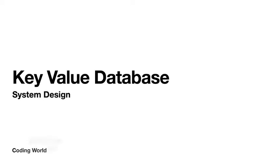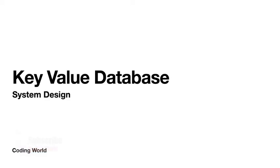Hi all, welcome back to Coding World. Today in this session we are going to see key-value database. Key-value database is one of the most important parts when you are designing your system, whether it is a small single server or even a distributed server. You have to use a key-value database wherever you want to search faster. We have examples like DynamoDB and Cassandra where we get faster search and faster write. Let's start with how we design the key-value database in detail and what aspects we are covering.